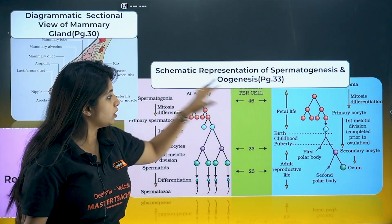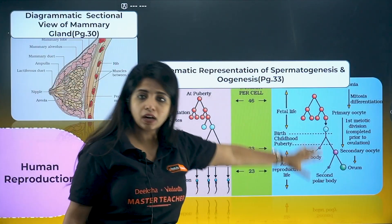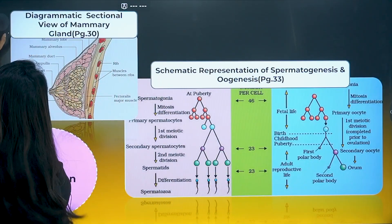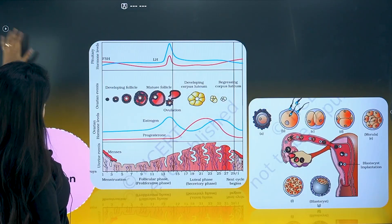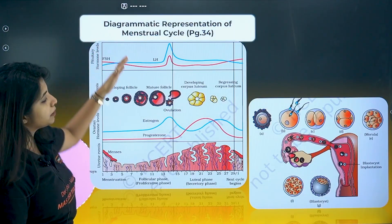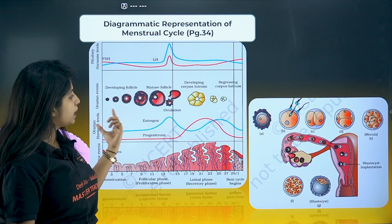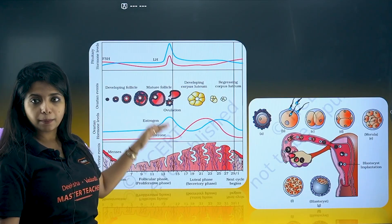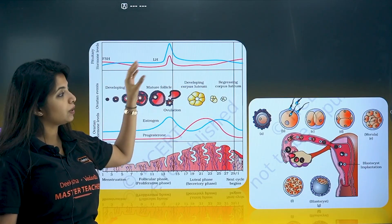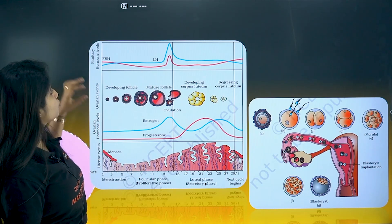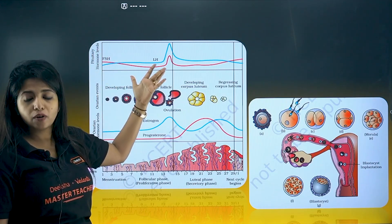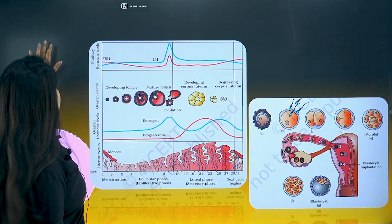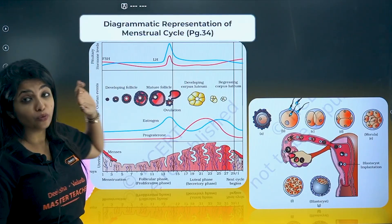The schematic representation of spermatogenesis — at the end you get four sperms, but in oogenesis here you only get one ovum. For the menstrual cycle, you won't be asked to draw it but you will be asked what happens in each phase — when estrogen goes up and down, what are the ovarian hormones, what are the pituitary hormones. LH and FSH are pituitary hormones.